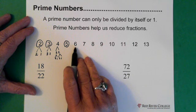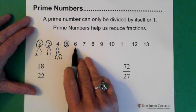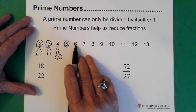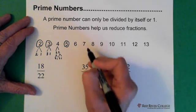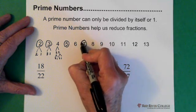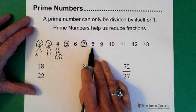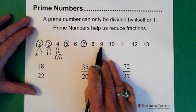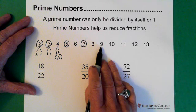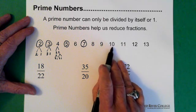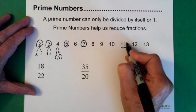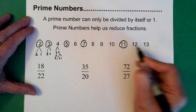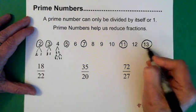Six — we have three times two and six times one, so it's not a prime number. Seven is a prime number. How about eight? Nope. Nine — nope, three times three and nine times one. Ten is not a prime number, but eleven is. And the next one is thirteen.